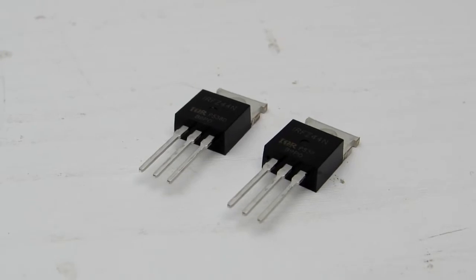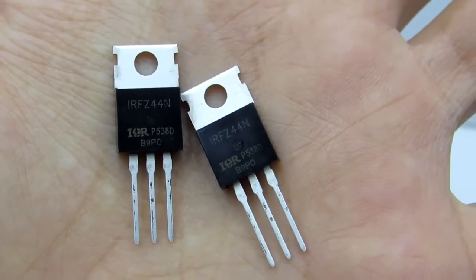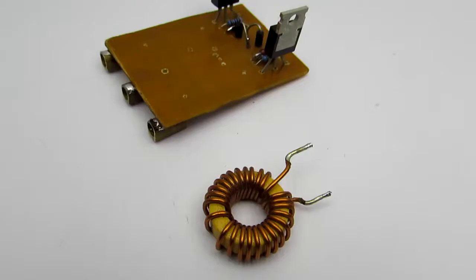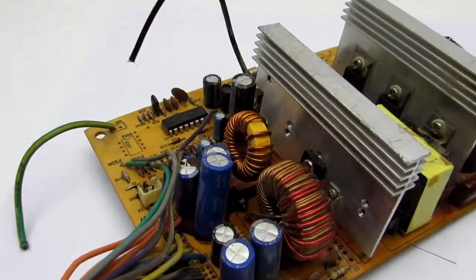Choke is taken from a computer ATX power supply. Core is made from iron powder.